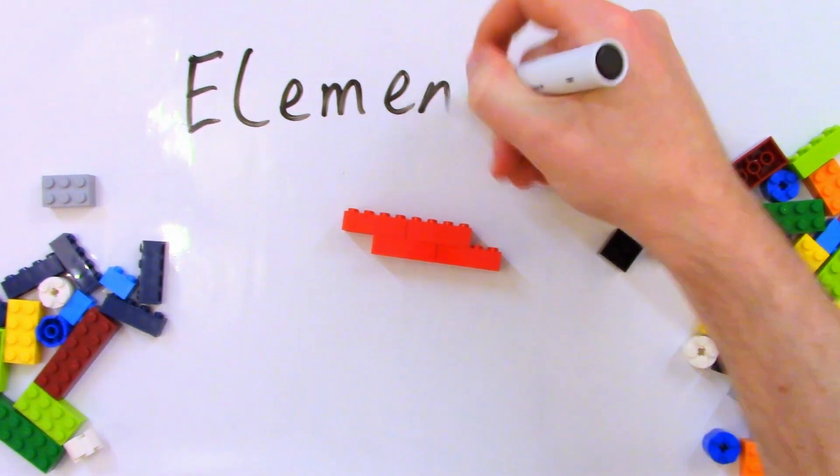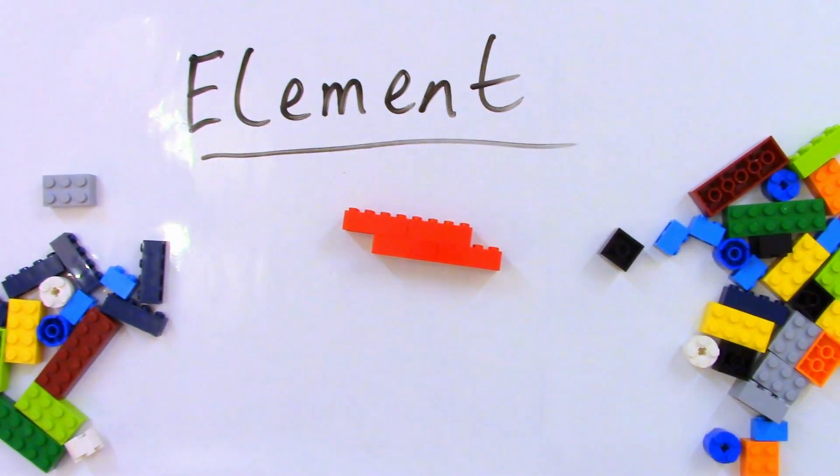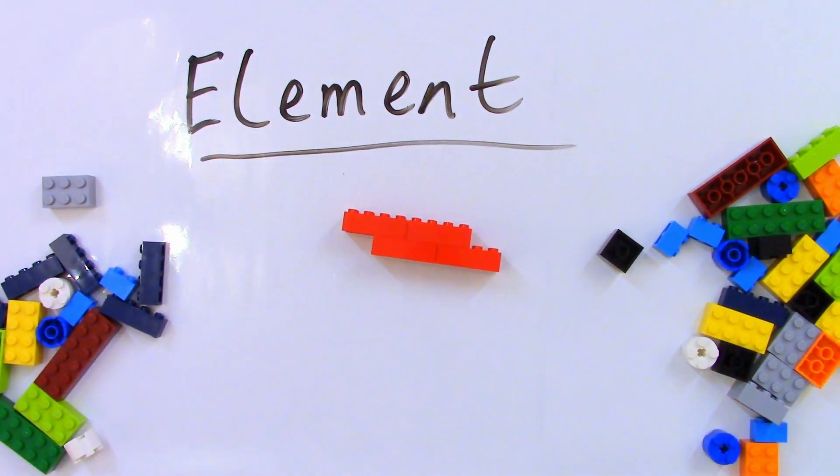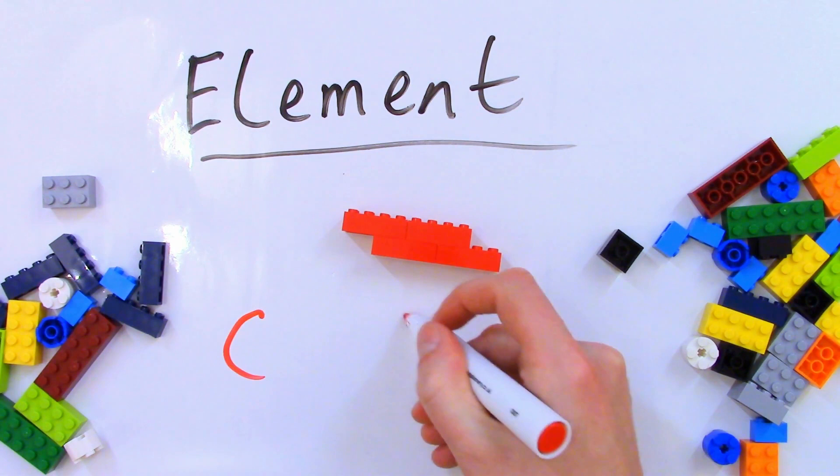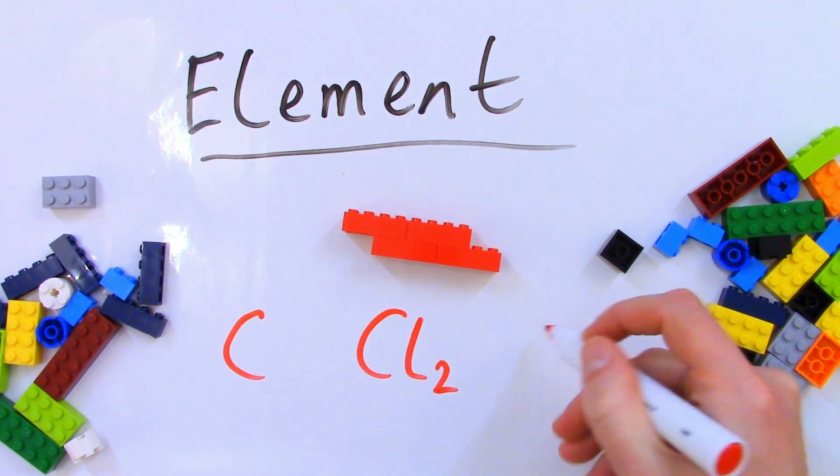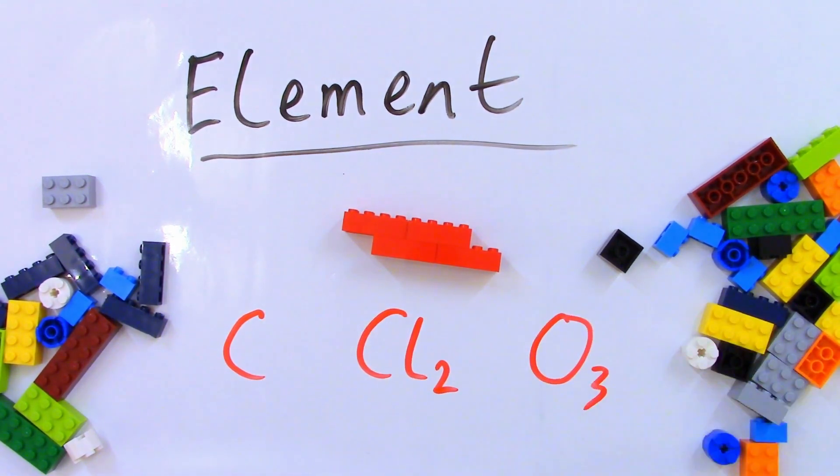The names of all the elements are, of course, listed in the periodic table, which you will usually receive a copy of in a chemistry exam if you need to check. Again, common ones are hydrogen, oxygen, carbon, nitrogen, silicon, iron, aluminium, sodium, and chlorine. Though, of course, there's about a hundred more. If you see the formula for a substance and it only has a single symbol from the periodic table, for example C, Cl2, or O3, then it's an element.